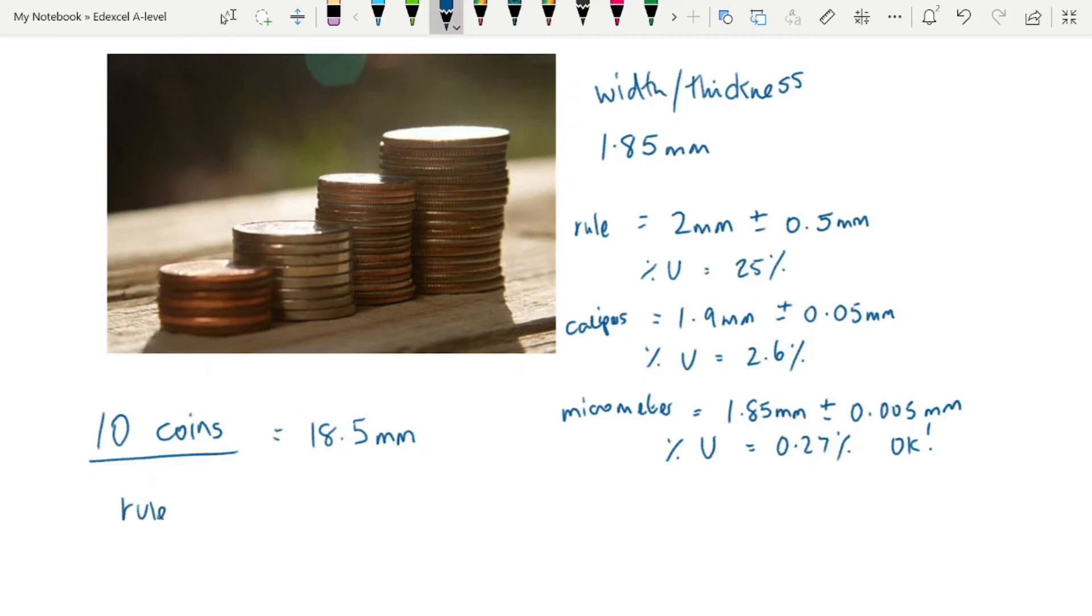What sort of uncertainties would we get? Well, with our meter rule, we'd have 20 millimeters plus or minus 0.5 millimeters, giving us a percentage uncertainty of 2.5%. You can see.